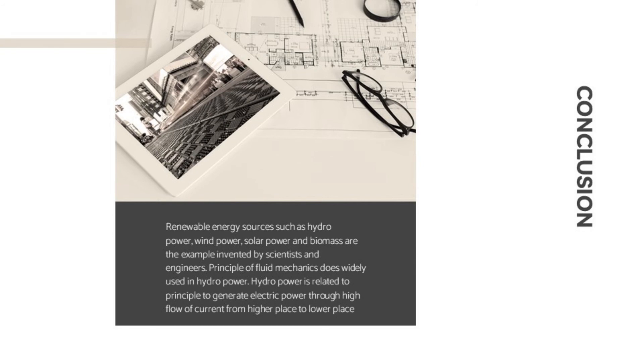Hydropower is basically related to principles to generate electrical power through high flow of current. Flow of water from higher places to lower places. Hydropower has been used in China from centuries ago but was improved by a famous engineer called James Francis in the mid-18th century.